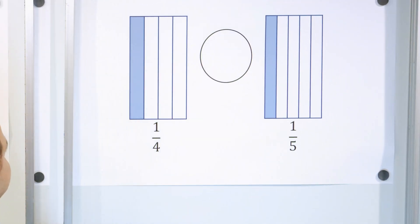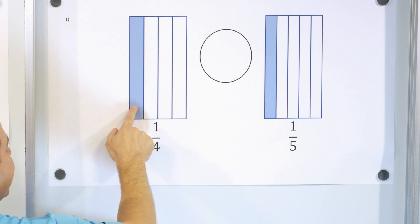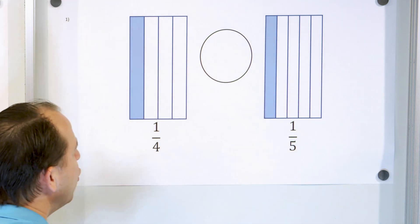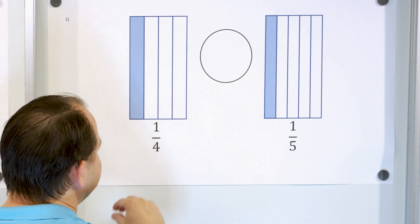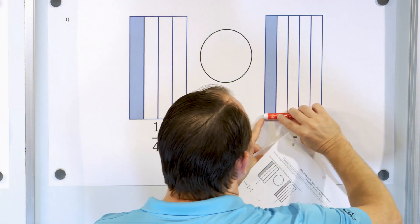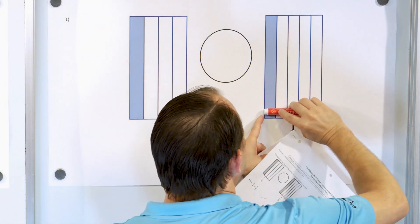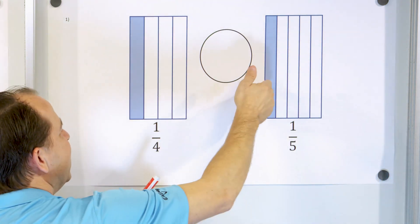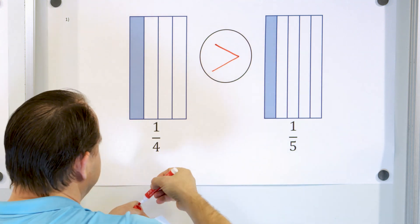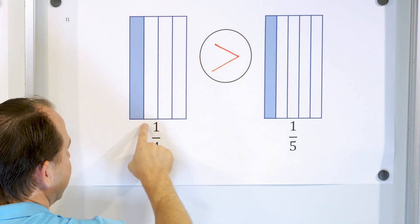Now here, instead of pizzas we have rectangles — maybe cakes. Here is one fourth, one piece out of four, and this is one out of five. Which one is bigger: one fourth or one fifth? If you compare how much is actually shaded, you can see that the shaded area for one fifth is actually less. So the arrow always points to the smaller number — meaning one fourth is actually bigger than one fifth. We say that one fourth is greater than one fifth.